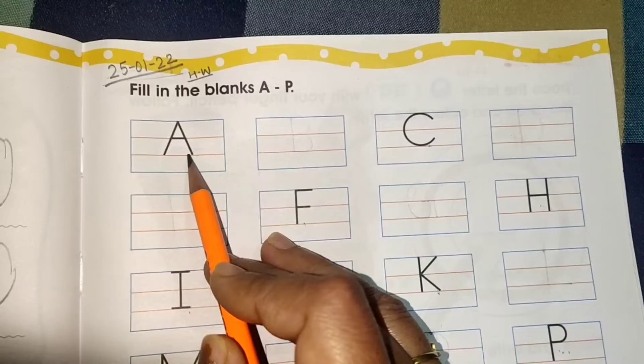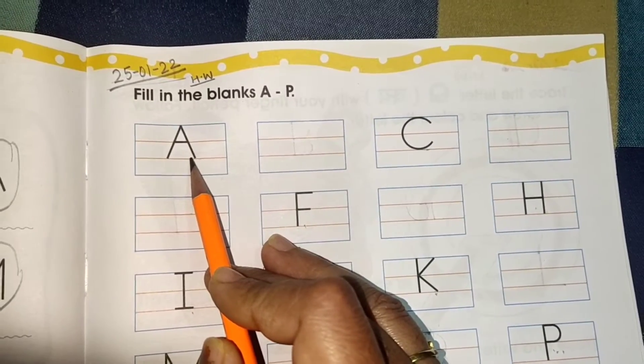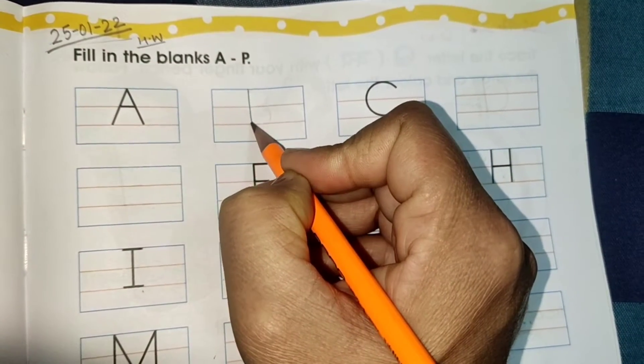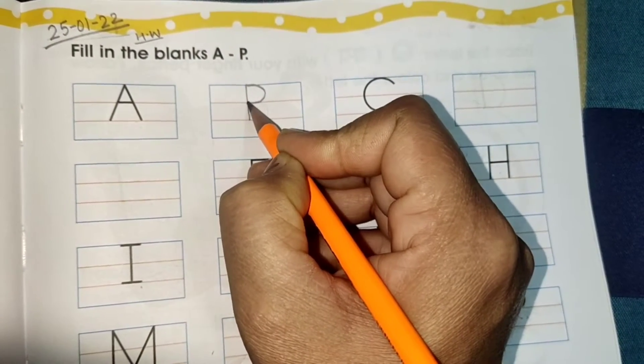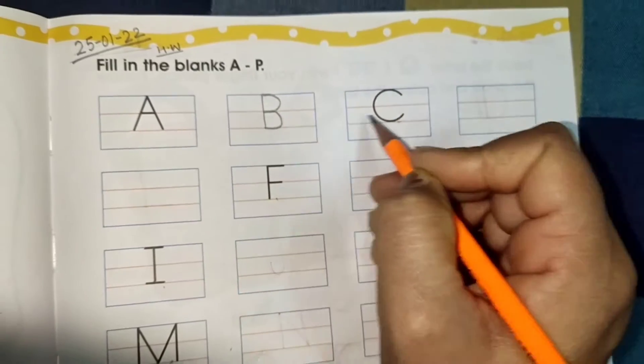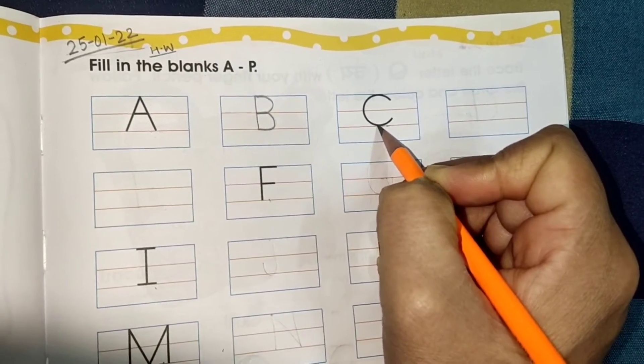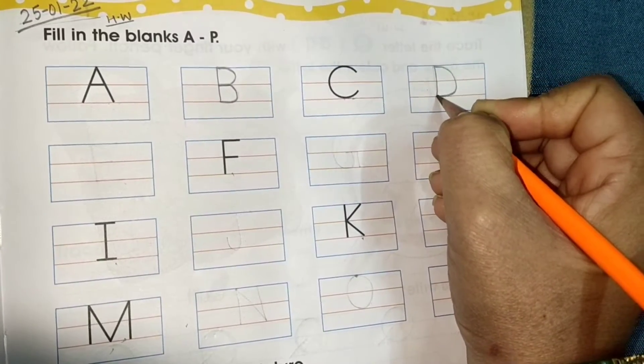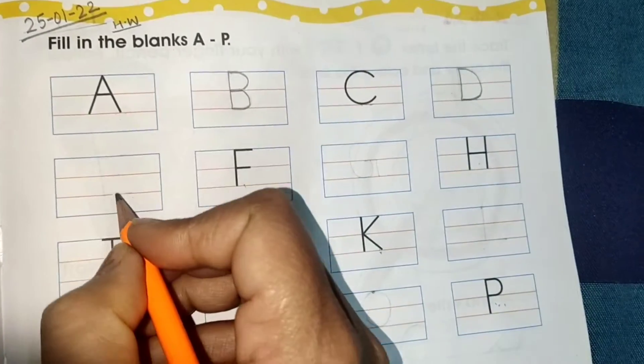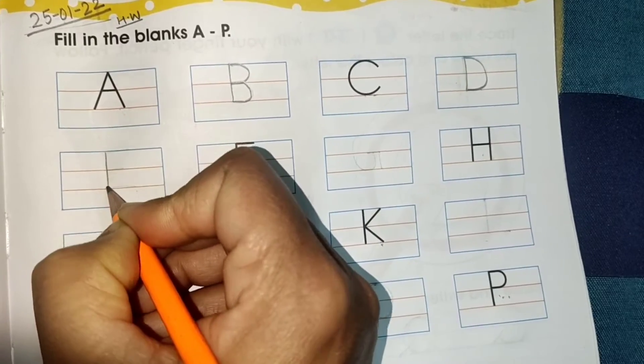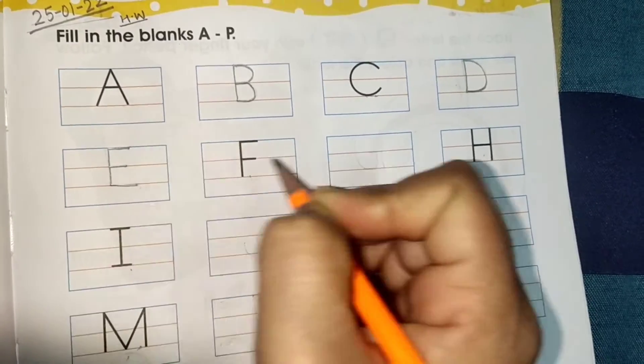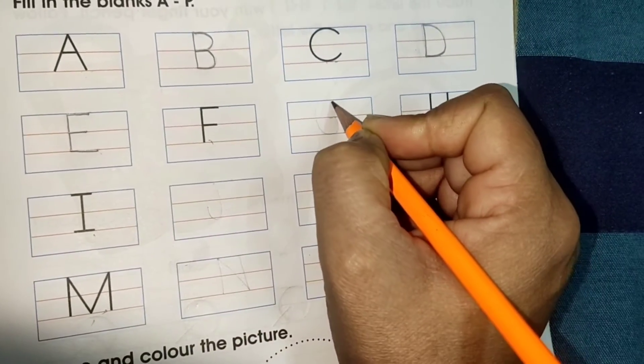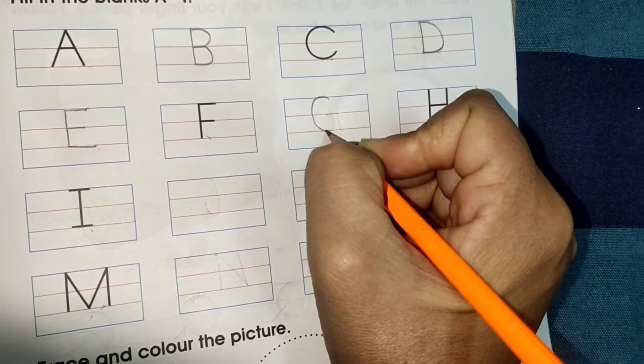Okay, first what is this? A. What comes after A? A ke baad kya aata hai? Yes, it's B. Then C. What comes after C? D. D ke baad E. Then yeh kya hai? F. After F, G.